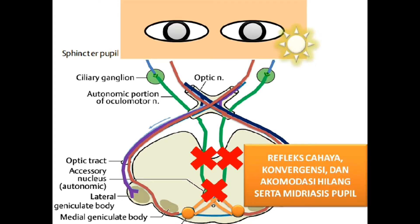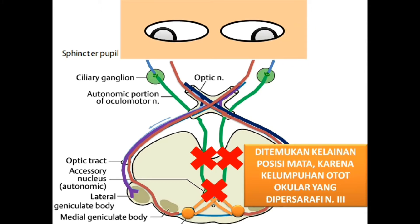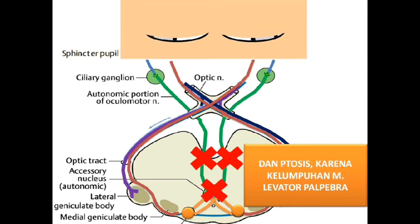Refleks cahaya konvergensi dan akomodasi hilang serta midriasis pupil. Dan ditemukan kelainan posisi mata karena kelumpuhan otot okular yang dipersarafi oleh nervus oculomotorius, serta ptosis karena kelumpuhan muskulus levator palpebra.